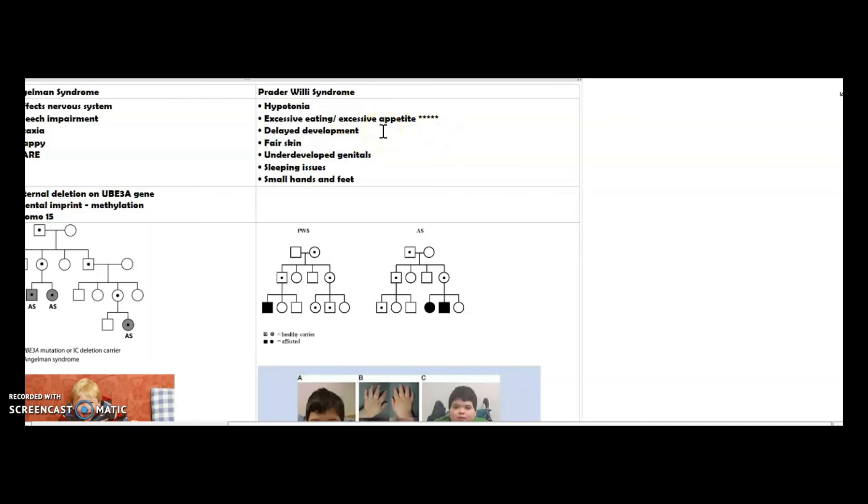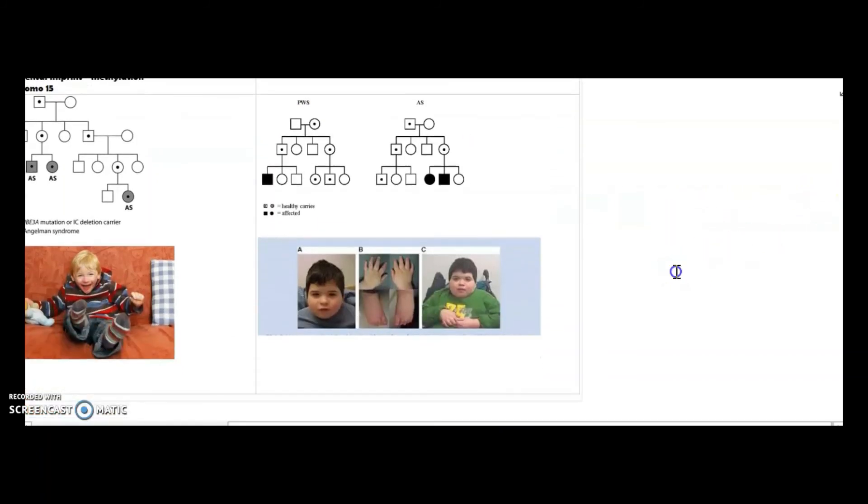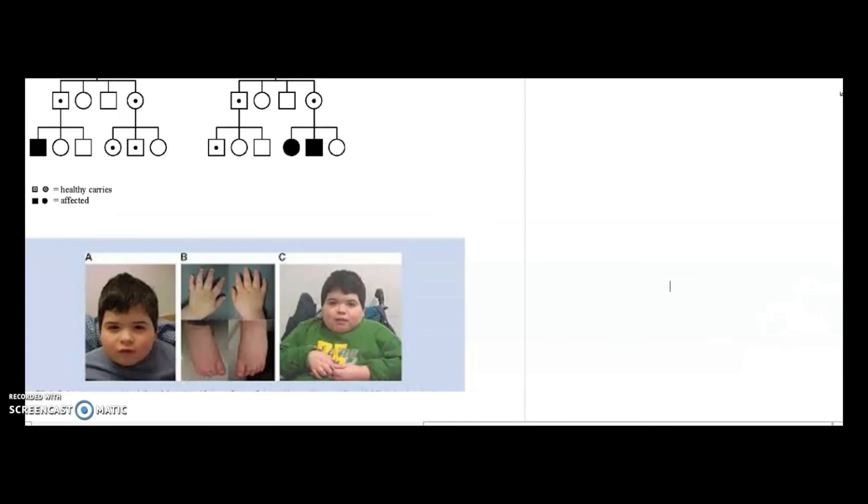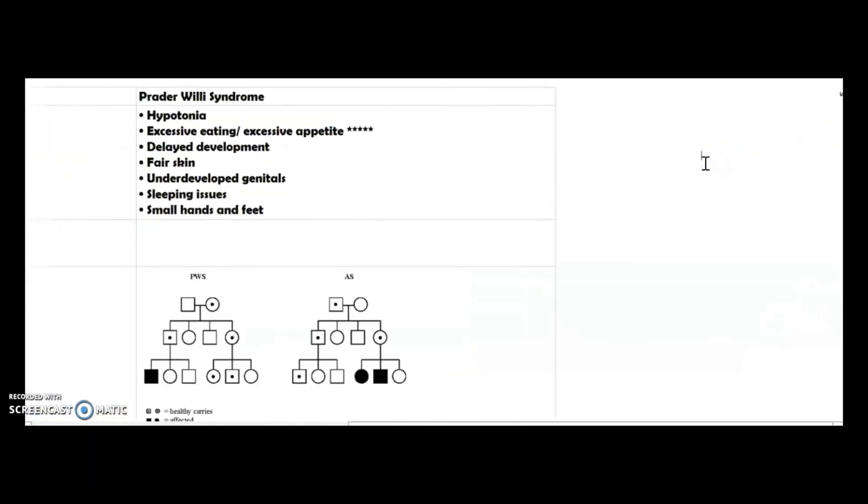Delayed development, fair skin tone, underdeveloped genitals, sleeping issues, small hands and feet. As you can see down here, I found a picture of a child with Prader-Willi syndrome. You can see the small hands, small feet, the fair skin. This child is also obese. So those are some of the symptoms that are seen with children with Prader-Willi syndrome.